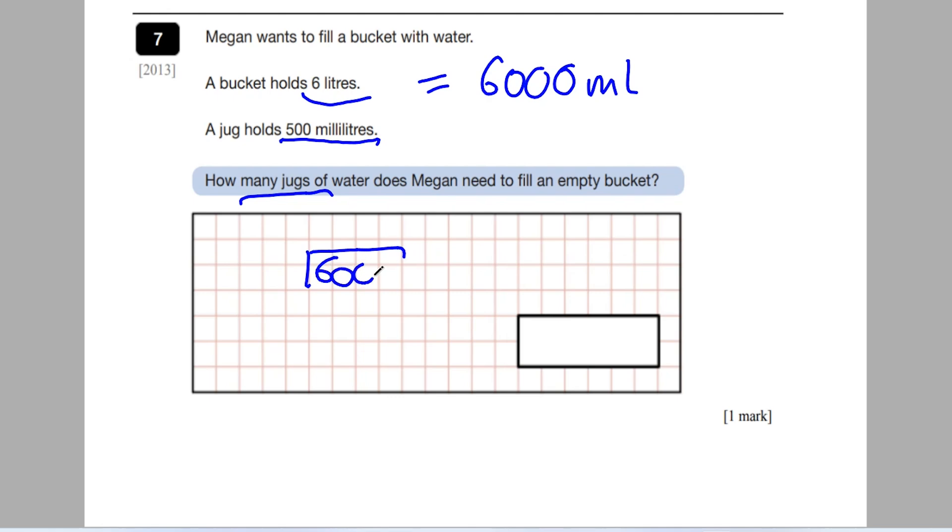Well, you could either do it this way, 6,000 divided by 500. Or you could use your known facts. For example, I know that 5 times 12 equals 60. So 500 millilitres times 12 would give me 6,000 millilitres. So really, she needs 12 of these jugs to make the bucket full, and 12 would be our answer.